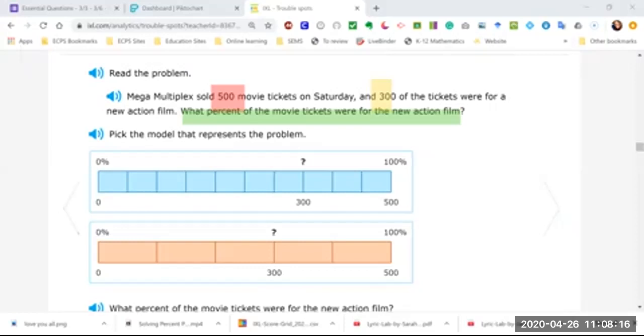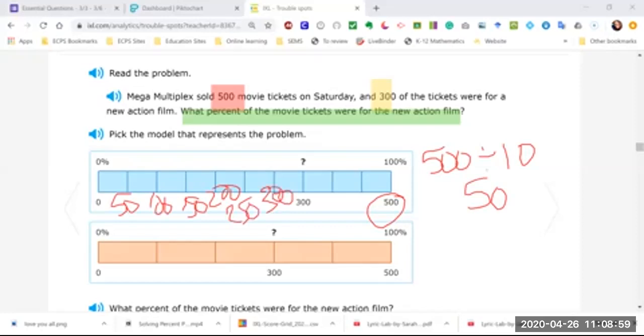So the first thing I'm going to do is pick a model to represent the problem. I'm gonna do the same thing I did last time, I'm going to count the number of sections. In the blue strip there are 1, 2, 3, 4, 5, 6, 7, 8, 9, 10 sections. So if I divide 500 which is the total amount by 10, then each of these sections would have to be 50. So if that's the case then this would be 50, 100, 150, 200, 250, and really 300 should be right here, so I'm thinking that's not it.